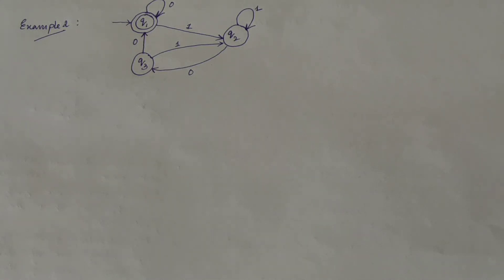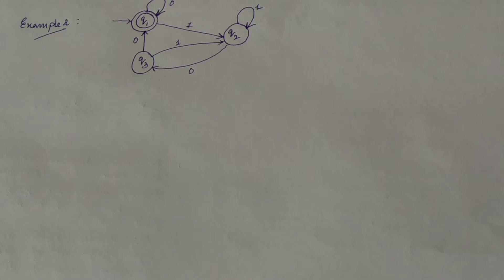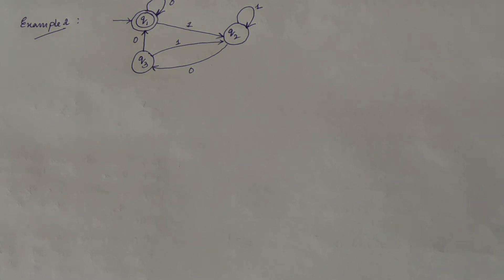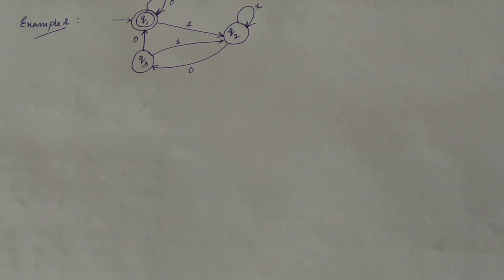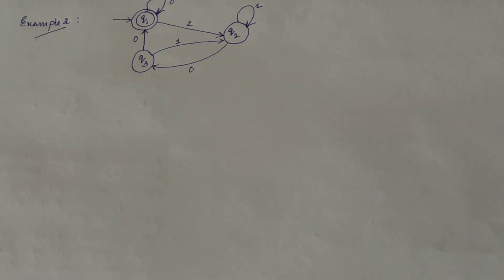Welcome to the video lecture series on Theory of Automata and Formal Languages. We are in Unit 2, learning about regular expressions. We have covered how to convert a regular expression to finite automata and vice versa. For conversion of a finite automata to a regular expression, we covered the state elimination method and Arden's theorem in previous lectures. We'll be working through one more example in this lecture.